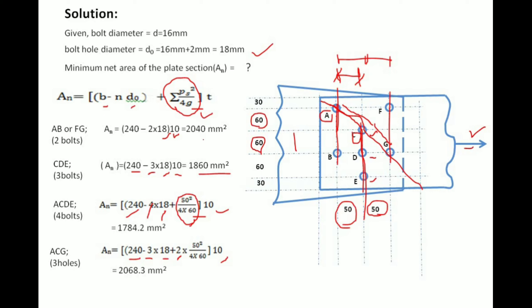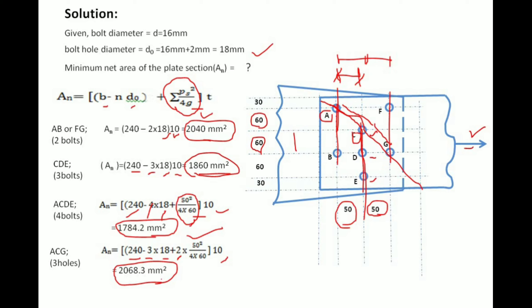Now we check which critical section has the minimum net area: A–B gives one value, C–D–E gives another, A–C–D–E gives 1784.2 mm², and A–C–G gives 2068.3 mm². The minimum net section area is 1784.2 mm² corresponding to the A–C–D–E section. This is the most critical section, and it is the one according to which we design our tension members.